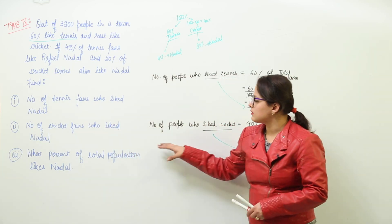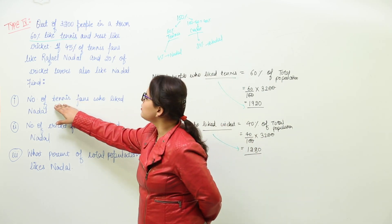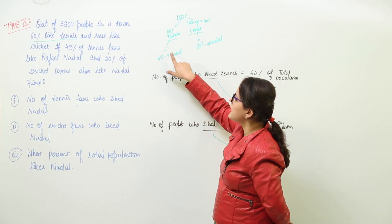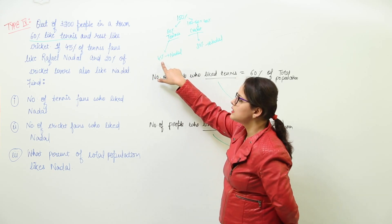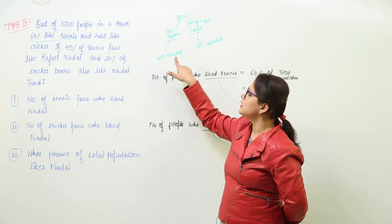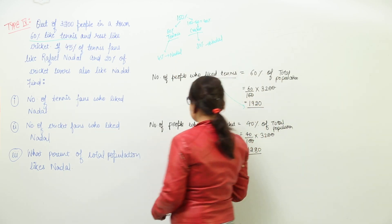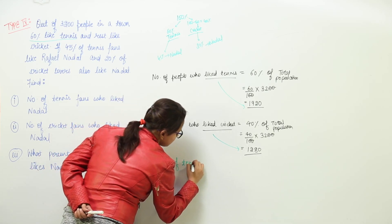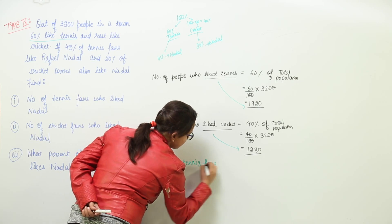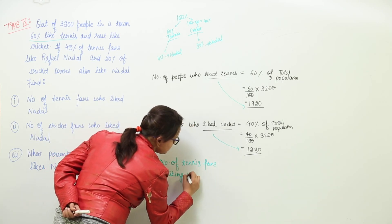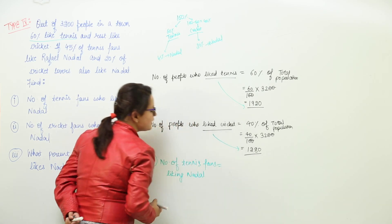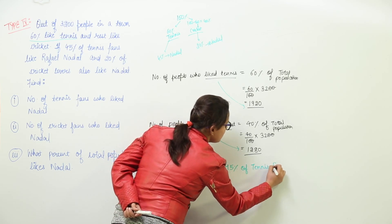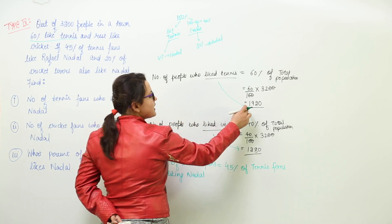Now the question is asking for the number of tennis fans who liked Nadal. 45% of tennis fans liked Nadal. The number of tennis fans liking Nadal would be equal to 45% of tennis fans, and we know there are exactly 1920 tennis fans.